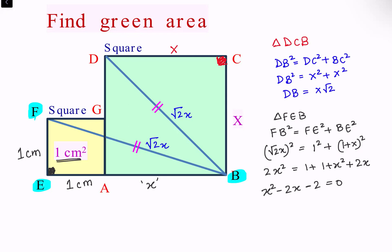Solving it, X square minus 2X equals 2. Adding 1 on both sides, we get X minus 1 whole square equals 3.